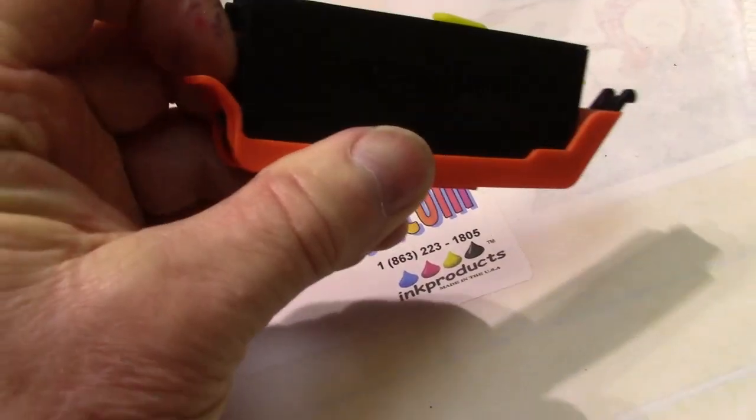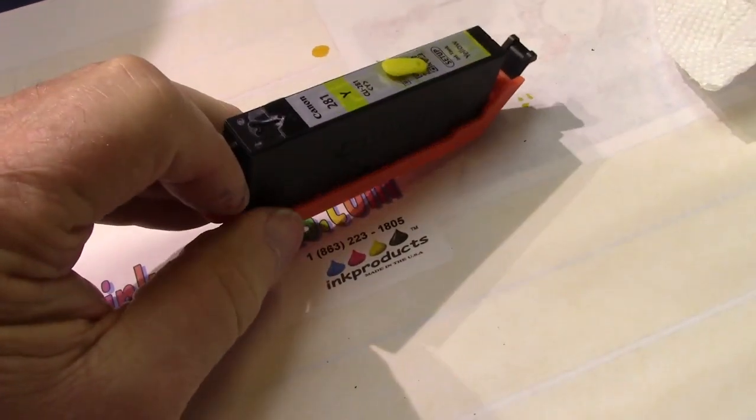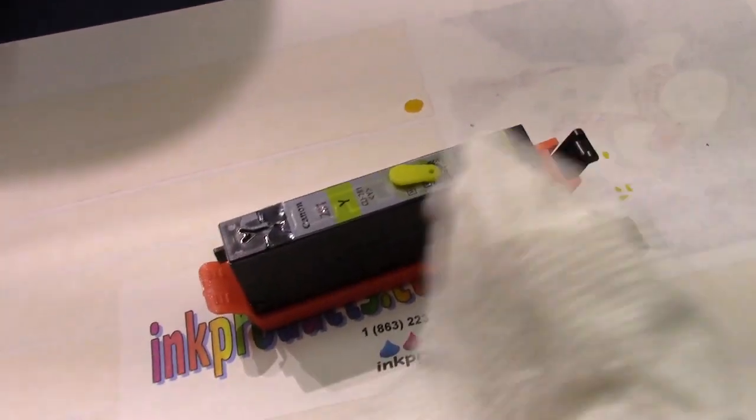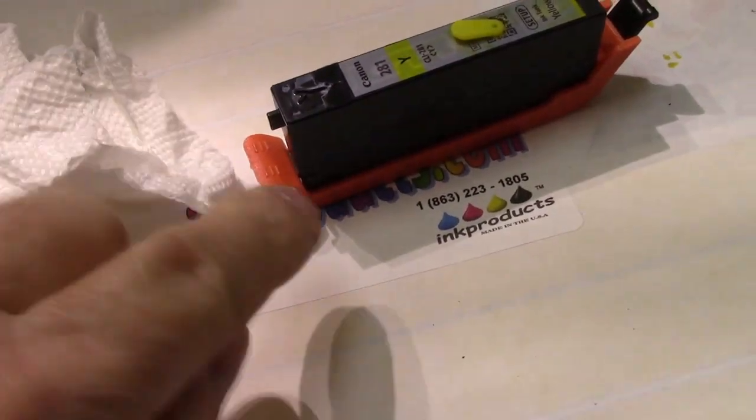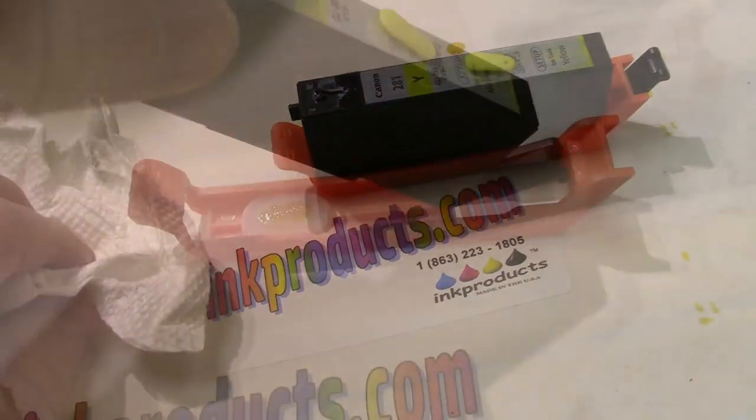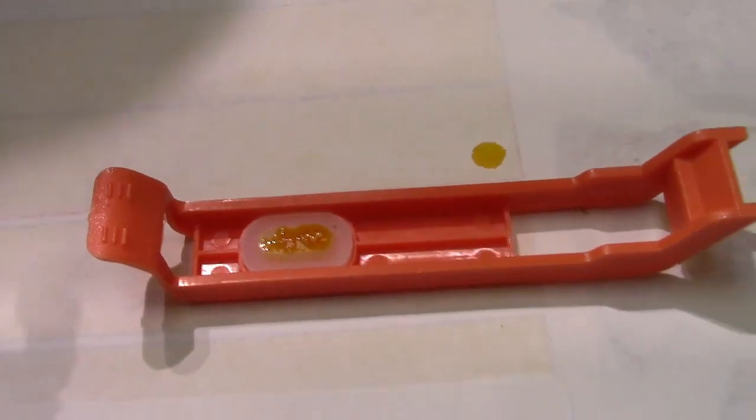From the front here you're going to peel out, push down on that and it's going to release it. Then you'll be able to put it in. Have some paper towel handy because you might want to block the bottom here. There's going to be a little ink dripping. Oh, it's just a little ink there, nothing to worry about.